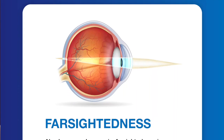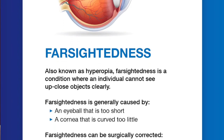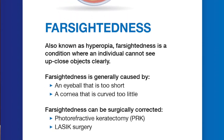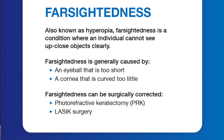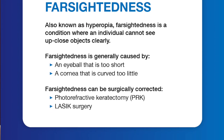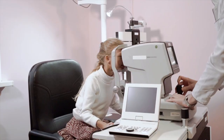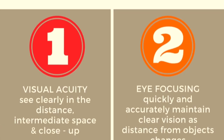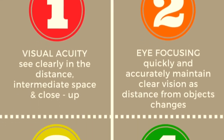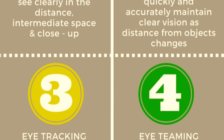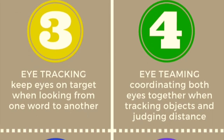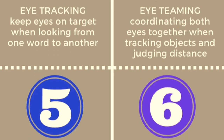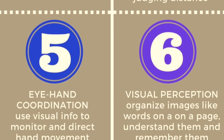Farsightedness or hyperopia and astigmatism are also diagnosed through a comprehensive eye exam. Amblyopia and strabismus are typically diagnosed during a pediatric eye exam, which may include a visual acuity test, eye alignment assessment, and a comprehensive eye exam.